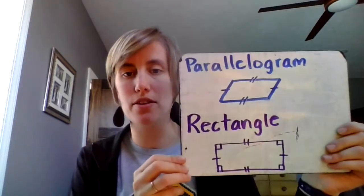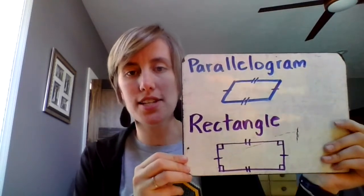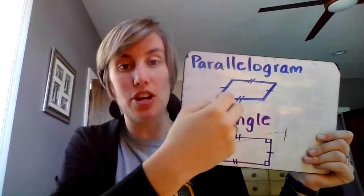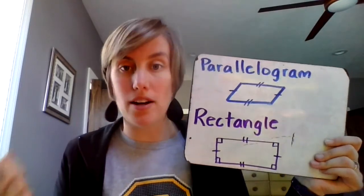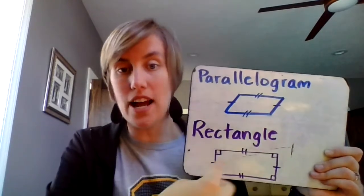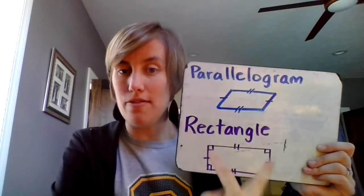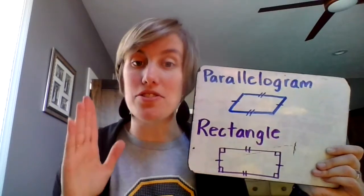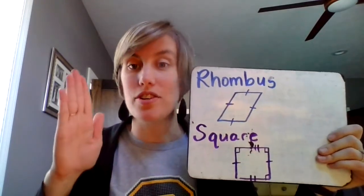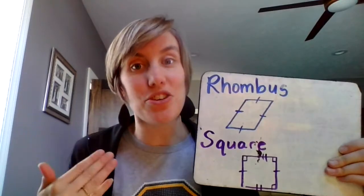Here's what I want you to understand: look at the parallelogram and the rectangle. They both have two sets of parallel lines and two sets of lines of the same length. A parallelogram is just a rectangle on a little bit of a slant. Same thing for a square — if you just slant that square a little bit, you'll have a rhombus. That is how you classify these shapes.